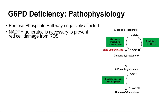That NADPH that is generated can then be utilized by glutathione reductase to reduce the amount of reactive oxygen species. So when this enzyme is deficient or absent, NADPH decreases, and this reduces glutathione reductase enzyme activity, which then reduces its ability to clear reactive oxygen species (ROS), increasing ROS levels. Increased reactive oxygen species will then damage the red blood cell.